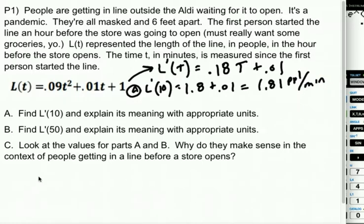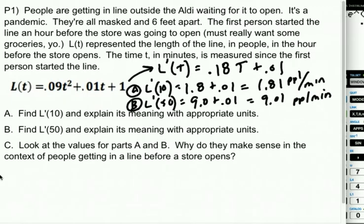So when I'm asked to explain what A means in words, let's just squeeze in B real quick too. We'll find what L'(50) would be. That's going to end up being 9.0 plus 1.01, which is going to end up being 9.01 people per minute.